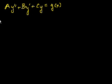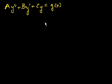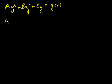Before I show you an actual example, I want to show you something interesting: the general solution of this non-homogeneous equation is actually the general solution of the homogeneous equation plus a particular solution. So let's say that h is a solution of the homogeneous equation.